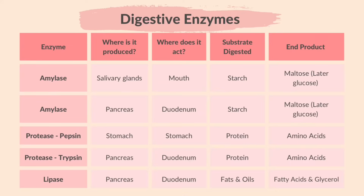The protease pepsin is produced in the stomach and acts in the stomach. The protease trypsin is secreted by the pancreas into the duodenum. The proteases break down protein into amino acids. The enzyme lipase is secreted by the pancreas and acts in the duodenum, digesting fats and oils into fatty acids and glycerol.